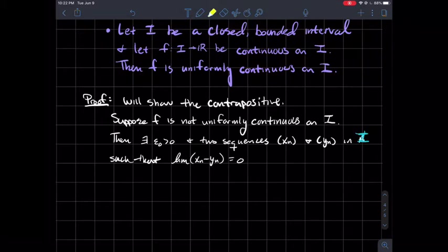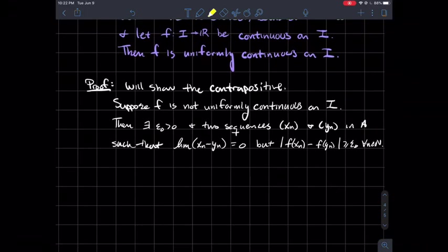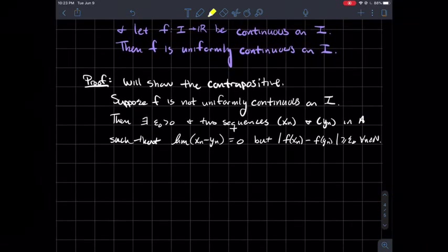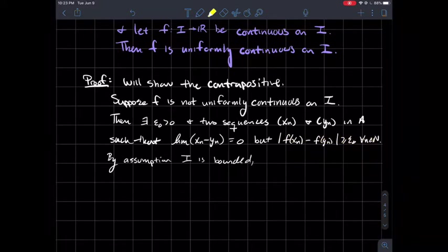We're trying to say that these sequences, x_n and y_n, should get arbitrarily close to each other. As n gets big, these points should get next to each other. What else should happen if I think back up to the non-uniformity criterion? The points in my sequence get really close to each other, but the outputs never get within epsilon_0 of each other.